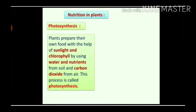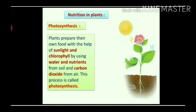Let's see the process of photosynthesis. The process of photosynthesis takes place in green plants, in which plants can prepare their own food. Plants prepare their own food with the help of sunlight and chlorophyll, by using water and nutrients from soil and carbon dioxide from air. This process is called photosynthesis.